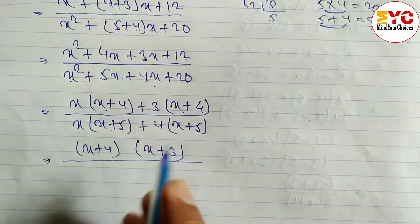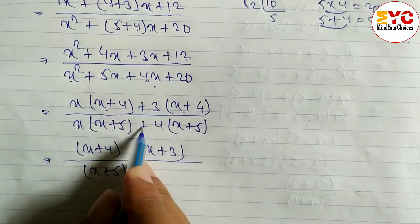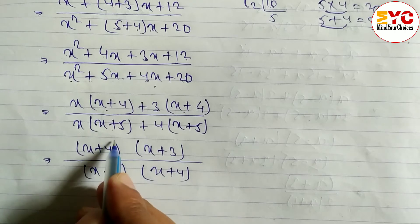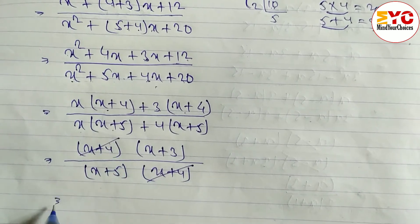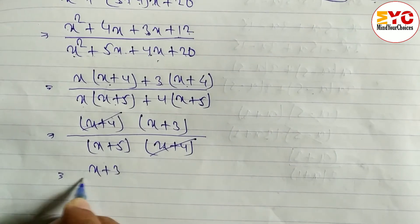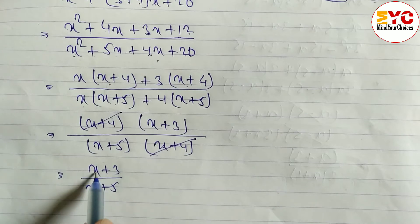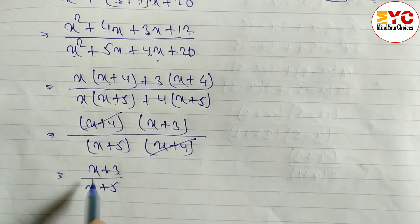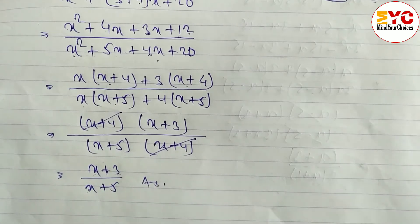Similarly x+5 is common in denominator, remaining x+4. Now we cancel x+4 with x+4. The remaining answer is (x+3)/(x+5). Don't make the mistake of canceling x with x — these are two-term expressions. If it is addition or subtraction we cannot cancel; only if multiplied can we cancel.